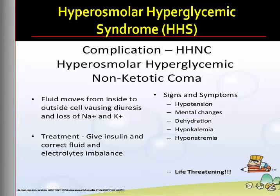HHS usually requires greater volumes of fluid replacement, but this should be accomplished slowly and carefully. Patients with HHS are commonly older and may have cardiac or renal compromise, meaning hemodynamic monitoring might be needed to avoid fluid overload. When blood glucose levels fall to approximately 250, IV fluids containing glucose are given to prevent hypoglycemia. Electrolytes are monitored and replaced as needed. Hypokalemia is not as significant in HHS as in DKA, although fluid losses may result in milder potassium deficits that require replacement.